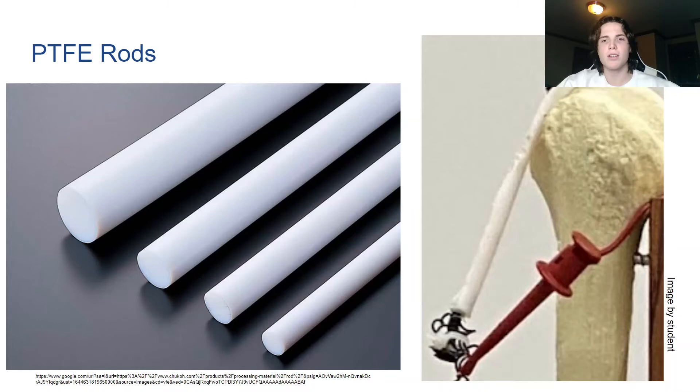An accurate tendon analog was also necessary so that the force the Nitinol produced would be transferred to the joint in a similar way to real muscle. PTFE rods were chosen since its elastic modulus is very similar to human tendons. They were then cut in half to make them the correct size and shape.